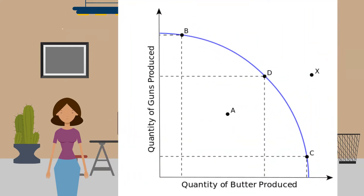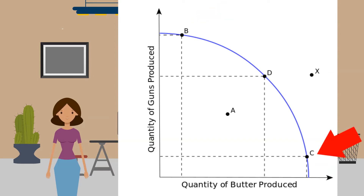PPFs are normally drawn as extending outward around the origin but can also be represented as a straight line. An economy operating on the PPF is productively efficient — it would be impossible to produce more of one good without decreasing production of the other. For example, in an economy that produces only guns and butter, production of guns must be sacrificed to produce more butter. The economy can choose between points on the PPF: point B for guns, C for more butter, or D for an equal mix.